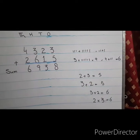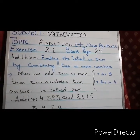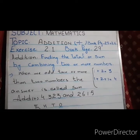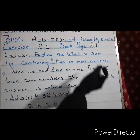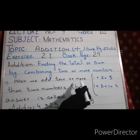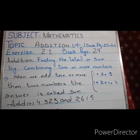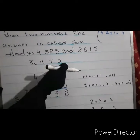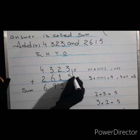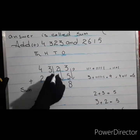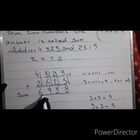What is addition? Finding the total or sum by combining two or more numbers. And what is sum? When we add two or more than two numbers, the answer is called sum. When we add numbers vertically, we arrange them in columns, write the place values, and add ones first, then tens, then hundreds, and at last the thousands.